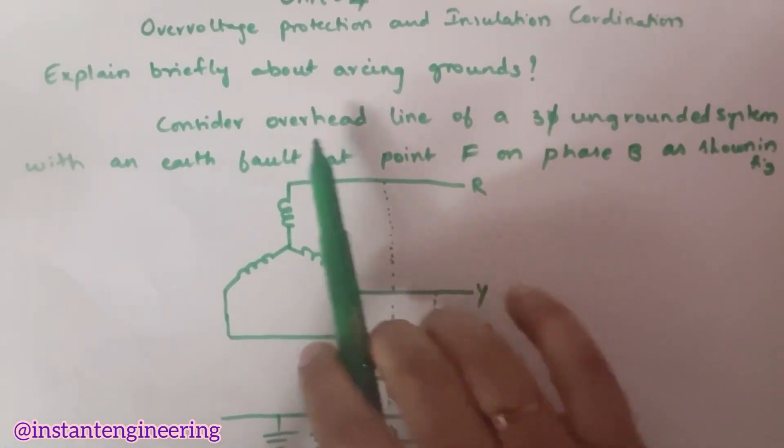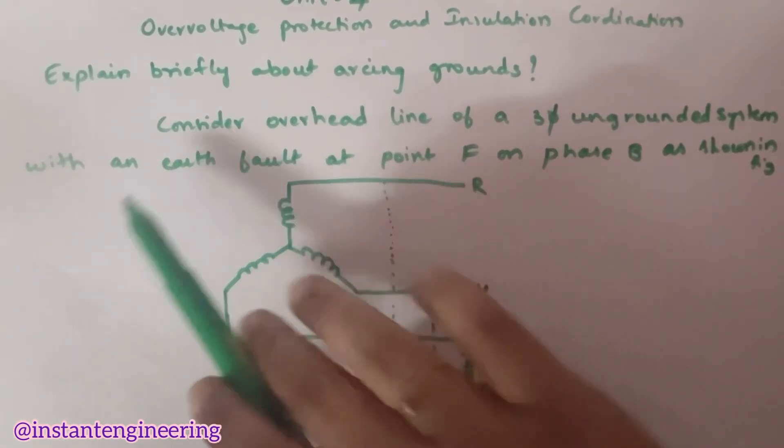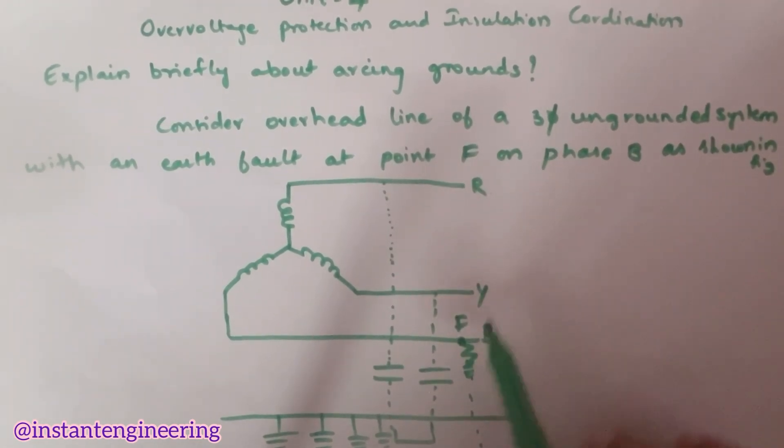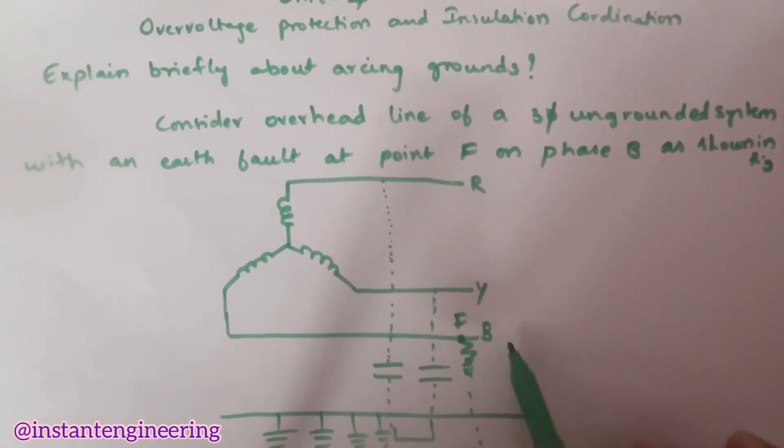So, if you consider an overhead line of a 3-phase ungrounded system with an earth fault, there is an earth fault here. Point F on phase B as shown in the figure. So, this is a 3-phase network, I mean 3-phase system, R, Y, B.